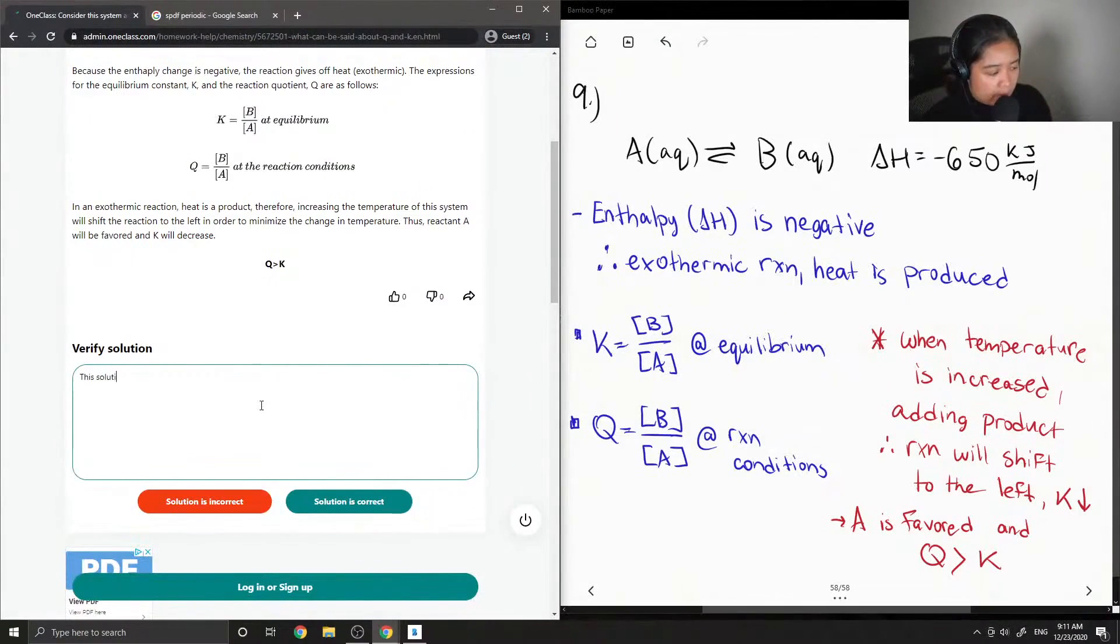Yep, so the solution is correct. So every time there's a change in the reaction conditions, the reaction wants to go towards something that will make it more in equilibrium. So that's why when more product is added, then it shifts more to the reactants to balance it out.